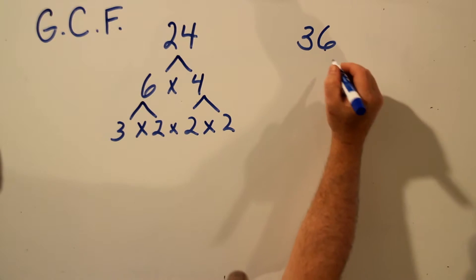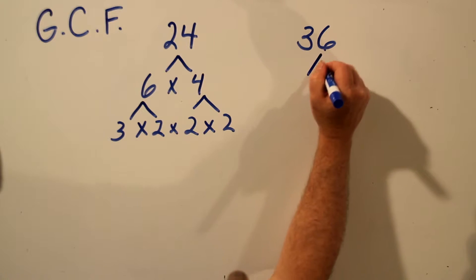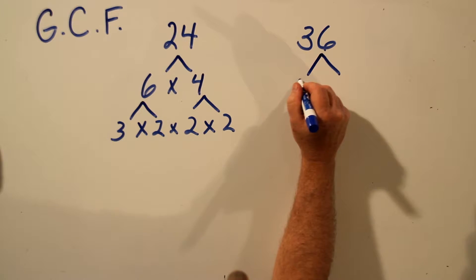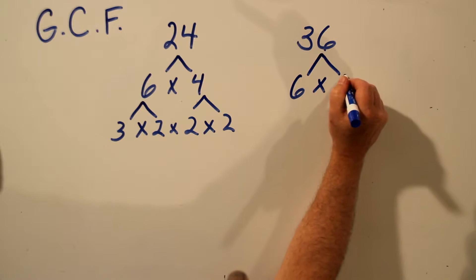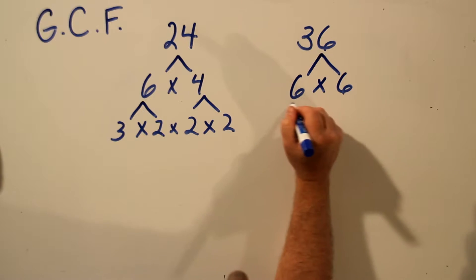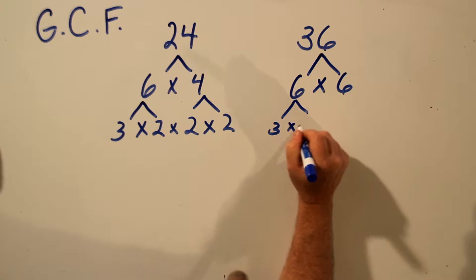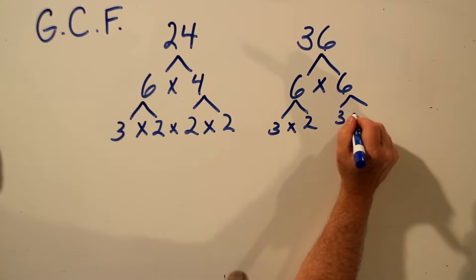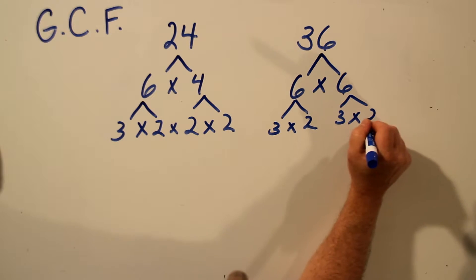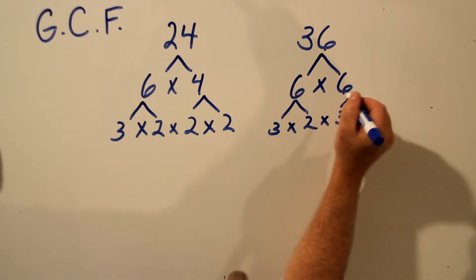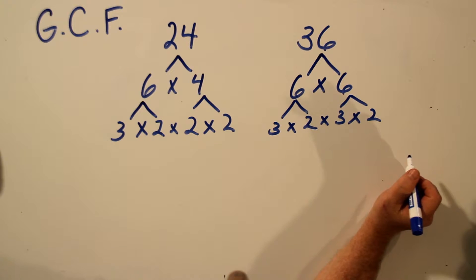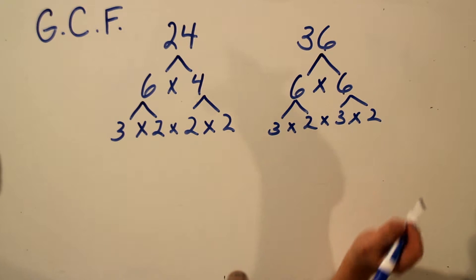Let's do the prime factor tree for 36. 36 is 6 times 6. And 6 is 3 times 2, and this 6 is also 3 times 2. Or you could start with 9 times 4 and you'd end up with the same prime factors in a different order.